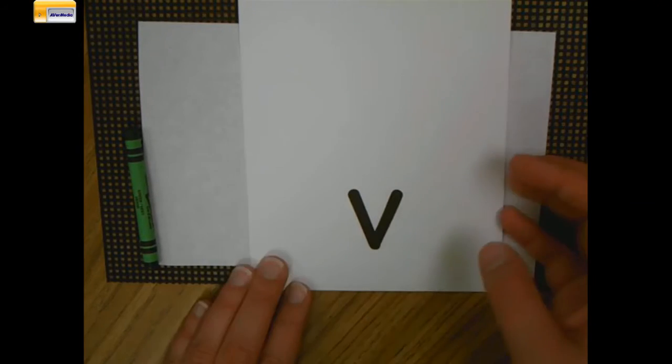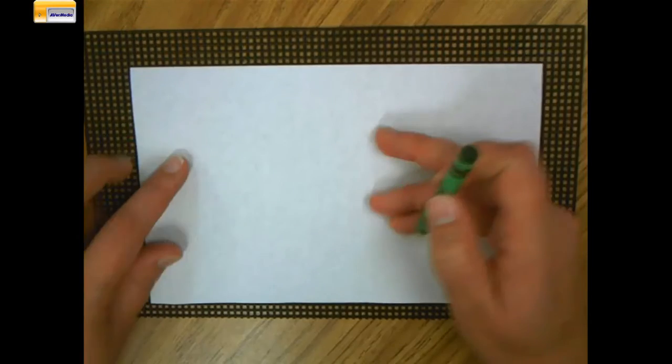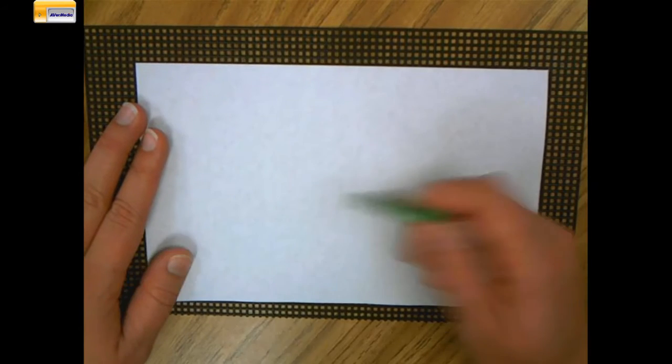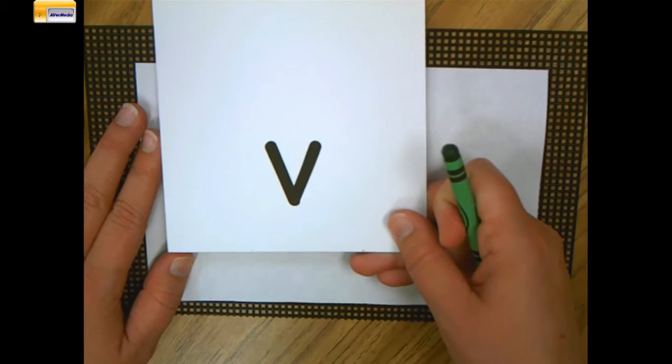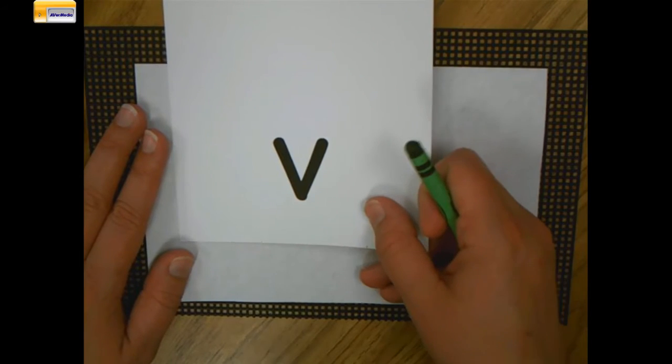Okay friends, let's get our supplies ready to write the letter V. I have a piece of paper and something to write with and a bumpy board if you have it. To write the letter V, it's very similar to some of the other letters we've learned this week. W and Y.